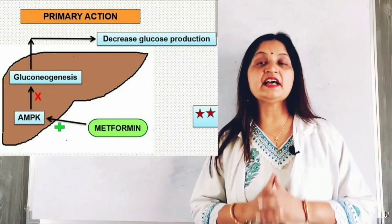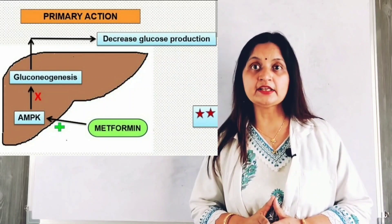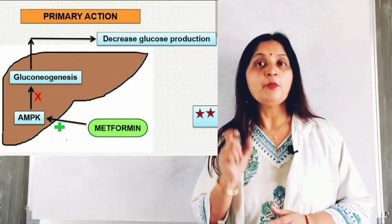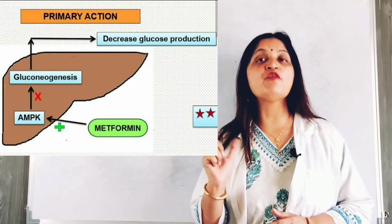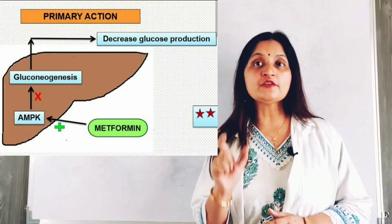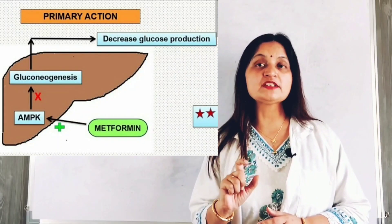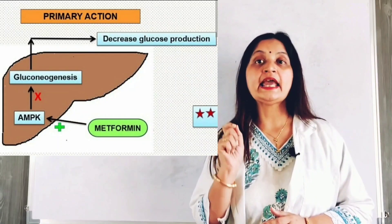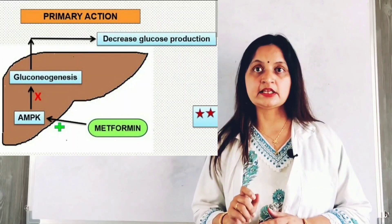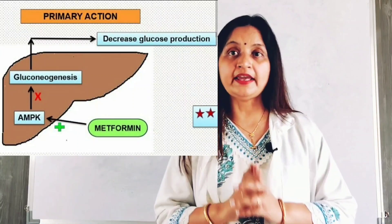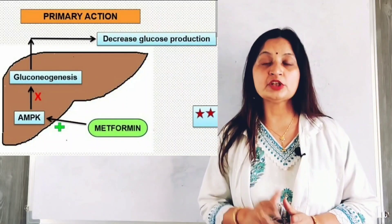As we can see in this figure, activated AMP-activated protein kinase is responsible for inhibition of gluconeogenesis. AMPK causes phosphorylation of transcription factors that are responsible for gluconeogenesis, thereby inhibiting them. The key enzymes responsible for gluconeogenesis are inhibited, which reduces glucose production by this pathway.